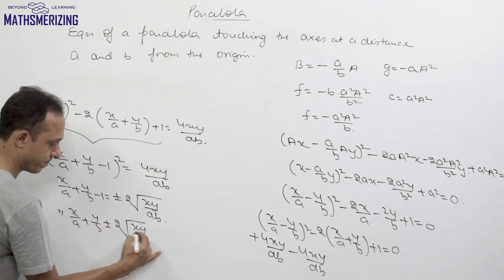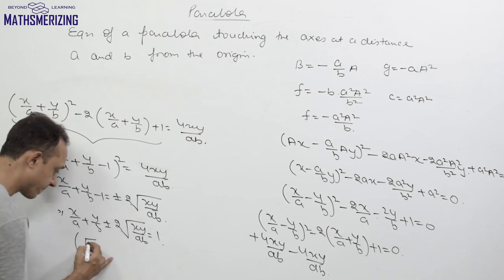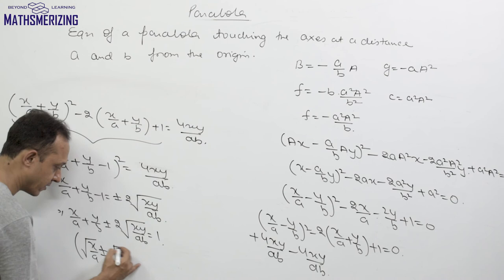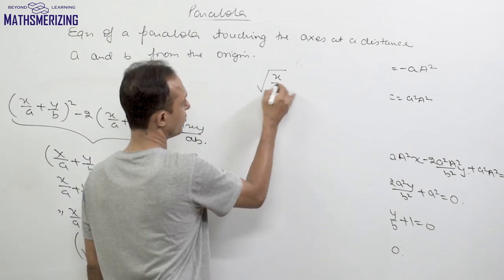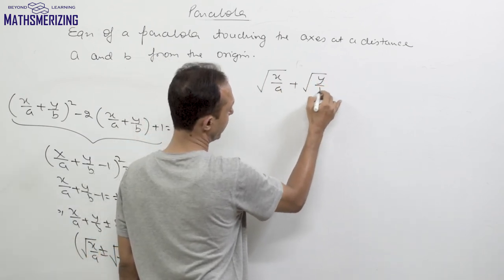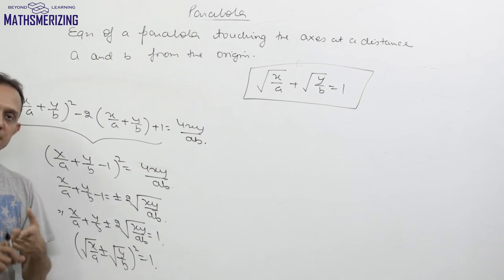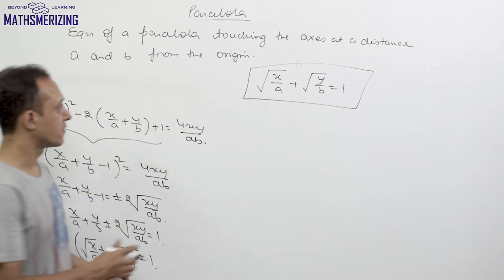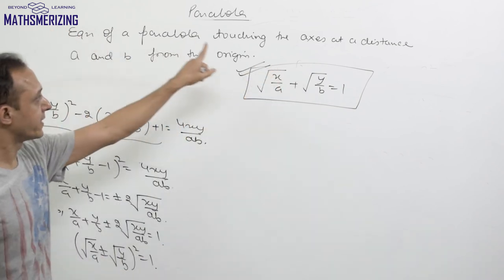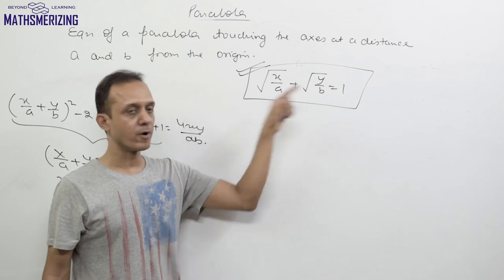So we have x/a + y/b − 1 = ±2√(xy/(ab)). Recognising the left side as a perfect square pattern (√(x/a) ± √(y/b))², we can write (√(x/a) + √(y/b))² = 1. Therefore √(x/a) + √(y/b) = 1. We discard the minus sign throughout since it represents the same parabola or a straight line. The equation of the parabola touching both axes at distances a and b from the origin is √(x/a) + √(y/b) = 1.